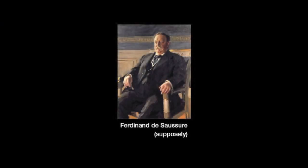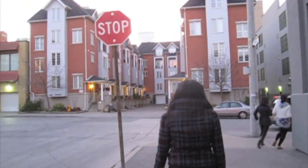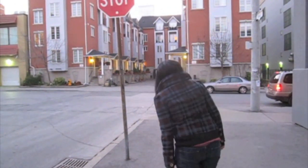Saussure, a Swiss linguist, theorized that signs function like language. He states that a sign is composed of two fundamental components, which are combined to communicate meaning. These components are the signified and the signifier. For example, a stop sign is the signifier and the signified concept is the command to stop. This is why we universally understand that we must stop when we see a red stop sign.